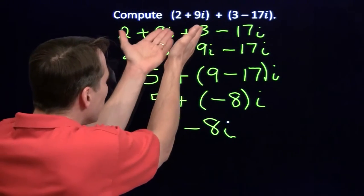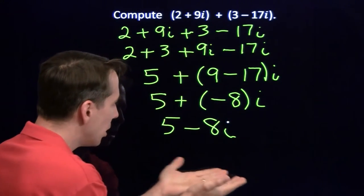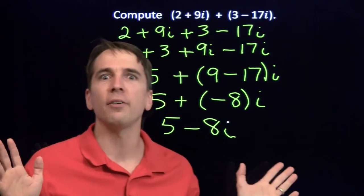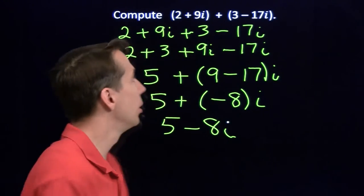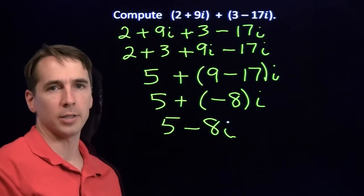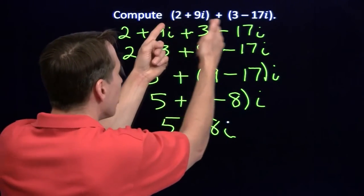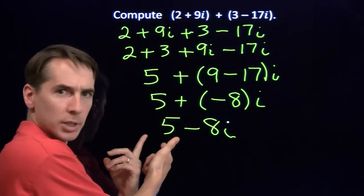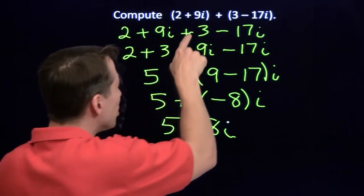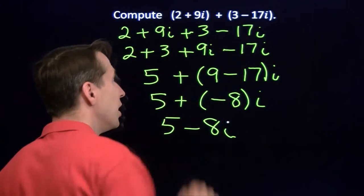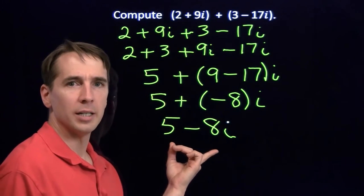But now look what happened here. We added these two complex numbers, and our sum is another complex number. We don't have to invent a whole new kind of number. We add two complex numbers, we get a complex number. And we can see pretty quickly what we actually did here. We took the real parts, 2 and the 3, we added those together, we got 5. And we took the imaginary pieces, the 9i and the minus 17i. 9i minus 17i gives us the minus 8i.